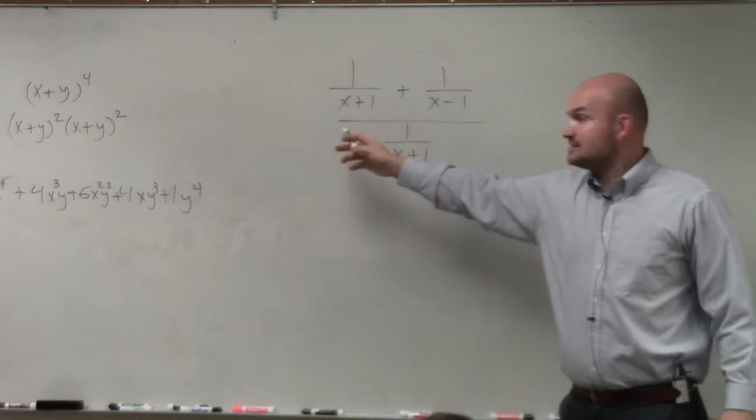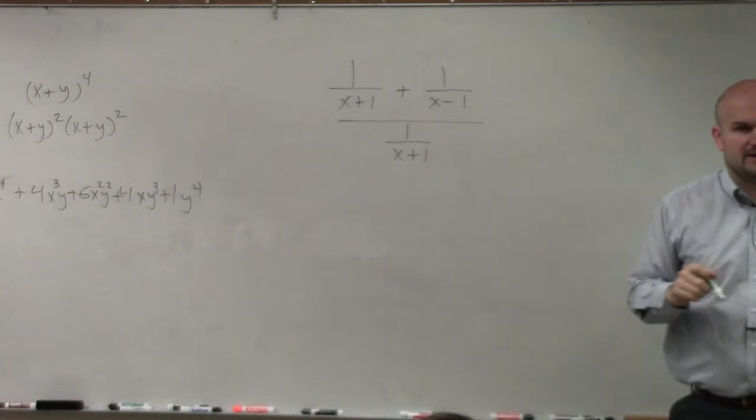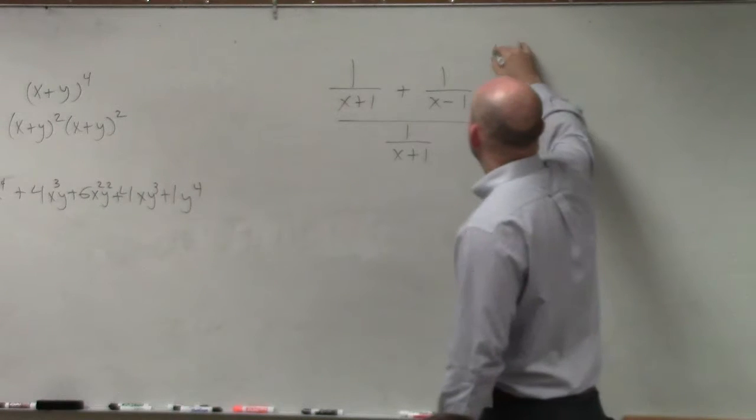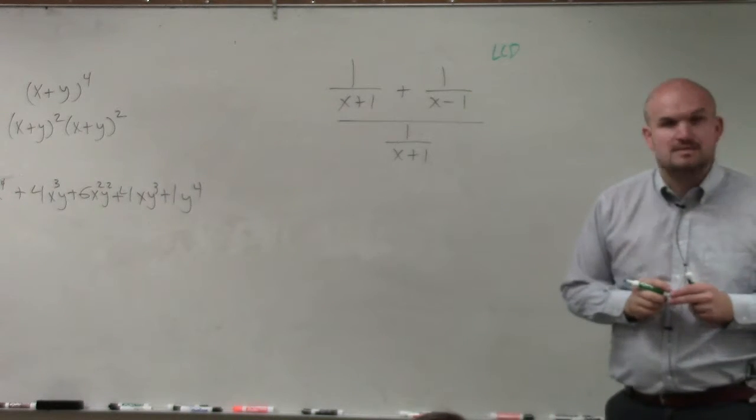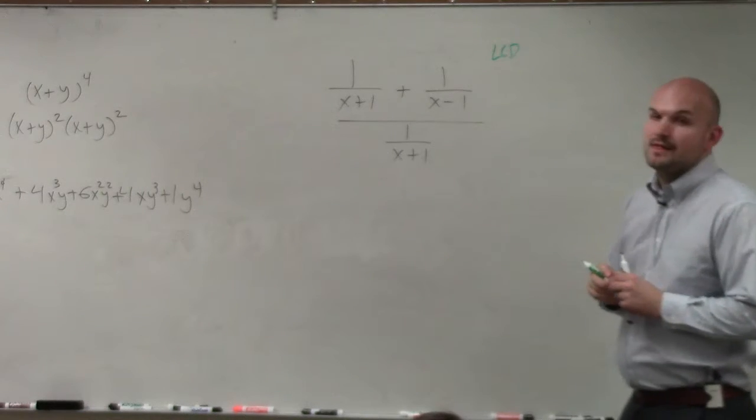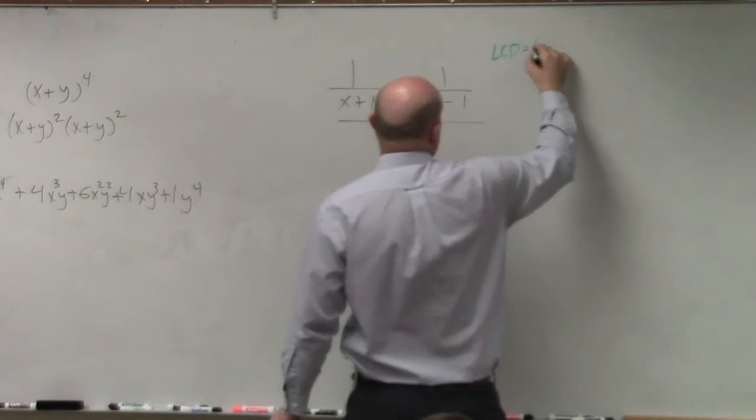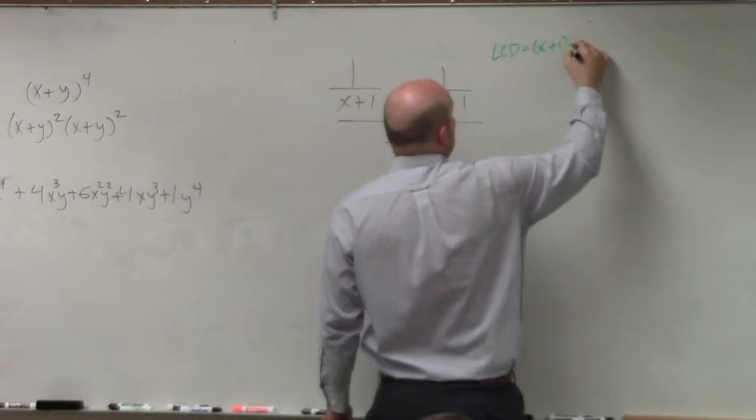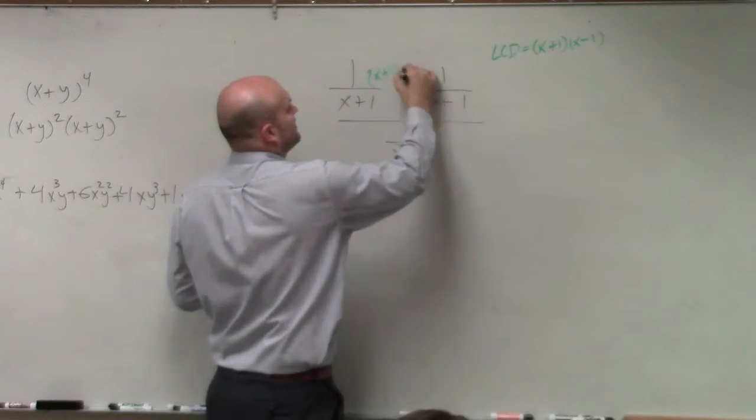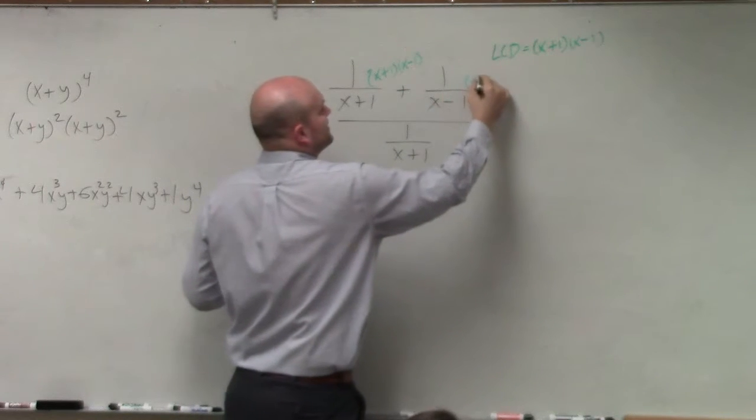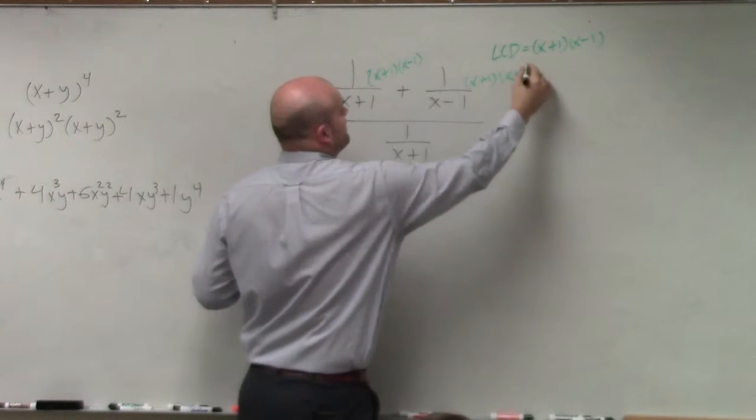So if we look at this, x plus 1 and x minus 1, what is our common denominator of all of these? Does anybody remember what our common denominator is for all of these? x plus 1 and x minus 1. So why don't we multiply everything by x plus 1, x minus 1? Because what I'm going to do there is get rid of my fractions.